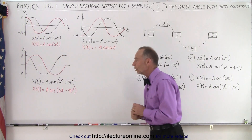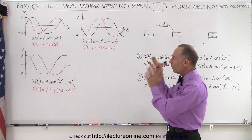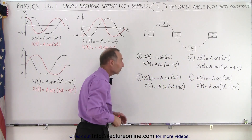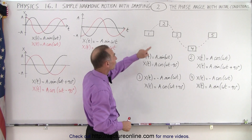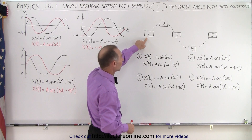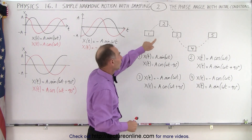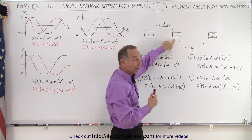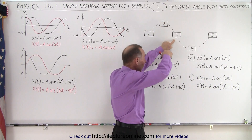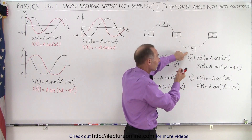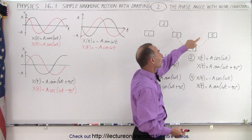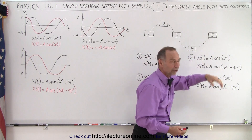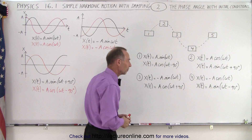Now we're going to apply that to simple harmonic motion. We have five starting positions: time equals zero at the equilibrium point on the way up; at its highest point; at the equilibrium point on the way down; at its lowest point; and back to the first position again — so positions one and five are essentially the same.